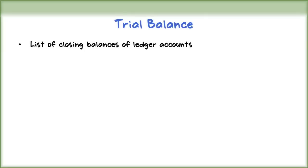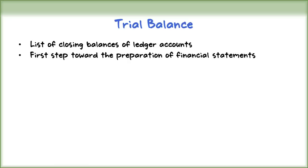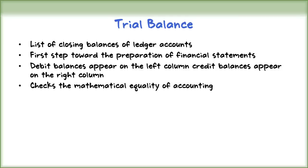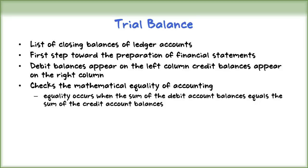In this video we will see how to prepare a correct trial balance. A trial balance is a list of closing balances of ledger accounts on certain dates and is the first step toward the preparation of financial statements. Accounts having debit balances appear on the left column and accounts having credit balances appear on the right. A trial balance is prepared to check the mathematical accuracy of accounting by ensuring that the sum of the debit balances equals the sum of the credit balances.